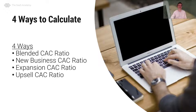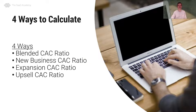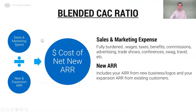There are four ways to calculate the CAC ratio. The first is the blended CAC ratio — that's all new and expansion ARR coming into the business. The second is the new business CAC ratio, focusing on the cost to acquire new business ARR. Third, we have the expansion CAC ratio, and fourth, the upsell CAC ratio. They all operate about the same way, differing only in what you put into the numerator and denominator. In today's lesson we're going to focus on the blended CAC ratio.